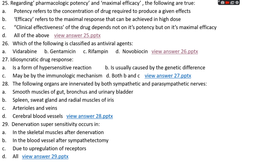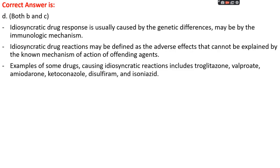Question number twenty-seven: idiosyncratic drug response — option A: is a form of hypersensitive reaction, option B: is usually caused by genetic differences, option C: may be by an immunologic mechanism, or option D: both B and C. The right answer is option D, both B and C. Idiosyncratic drug response is usually caused by genetic differences and may also be by an immunologic mechanism. Idiosyncratic drug reactions are adverse effects that cannot be explained by the known mechanism of action of the agent.